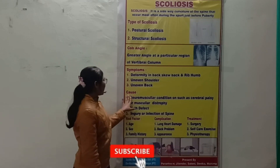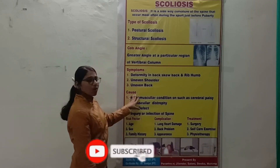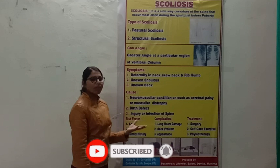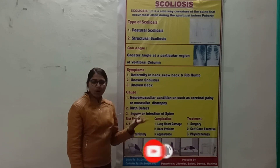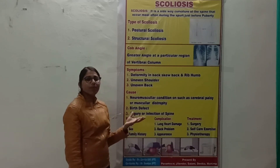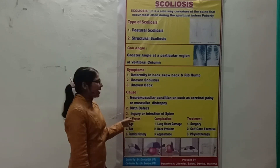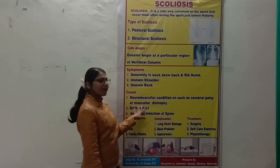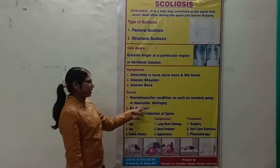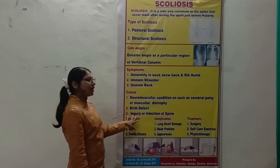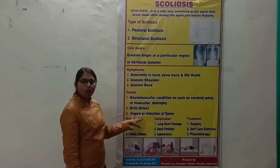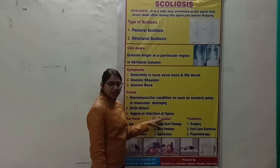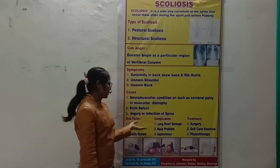Now let's come to the causes or etiology. The most common cause of scoliosis is a birth defect. The second is cerebral palsy or muscular dystrophy, and the third is injury or infection of the spine, which can also lead to scoliosis.